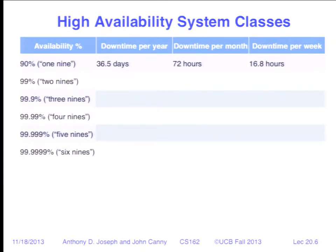There's an important distinction between scheduled and unscheduled outages. Everybody plays the game of not counting scheduled maintenance as part of unavailability — because if it's documented, it's a feature, not a bug. It's also good to have a regular maintenance window even if you don't actually use it, because that way you avoid unplanned or unscheduled outages.